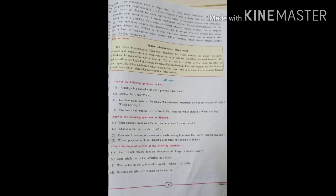Which phenomenon of far distance places affects the climate of India? Page number 122, atmospheric pressure and winds. Due to which reason or phenomena does change in season occur? The seasonal changes, page number 122, that will come: revolution and rotation of the earth. State briefly the factors affecting the climate.